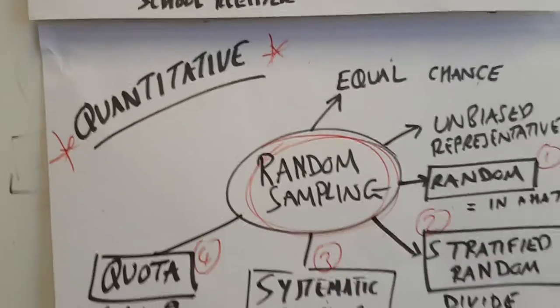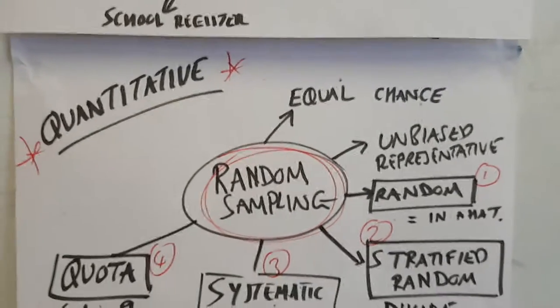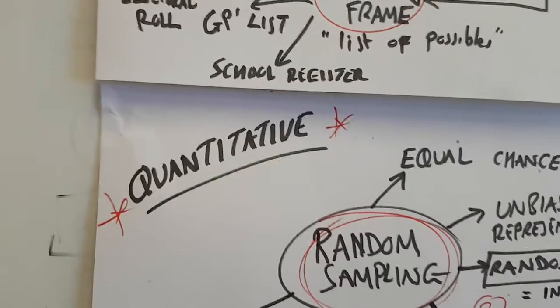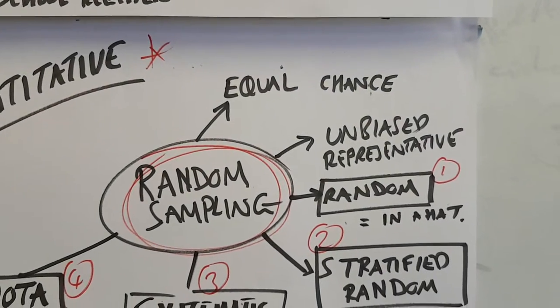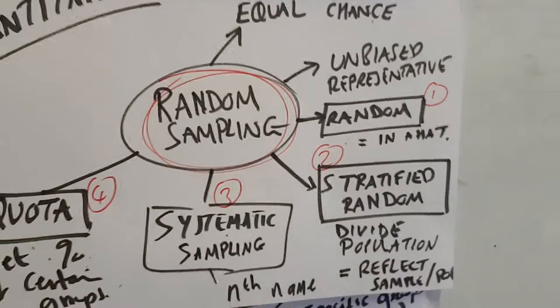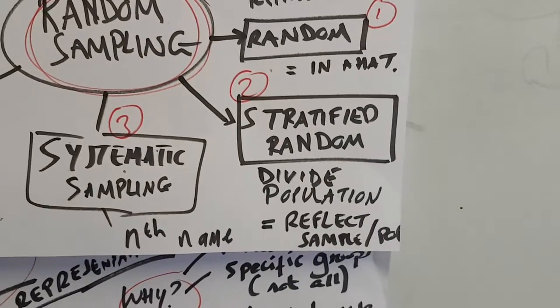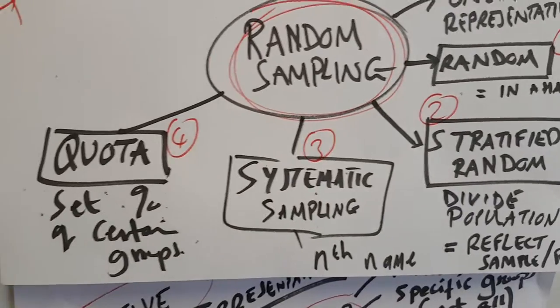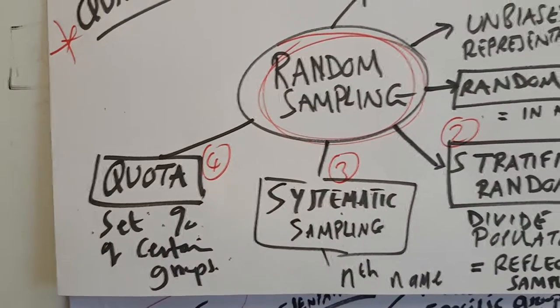We can then talk about the fact that there are those out there that tend to use random sampling mainly associated with a quantitative approach. It's an equal chance, it's felt to be unbiased and felt to be representative in nature, and you can talk about random, stratified random, systematic, and quota as different examples of achieving that.